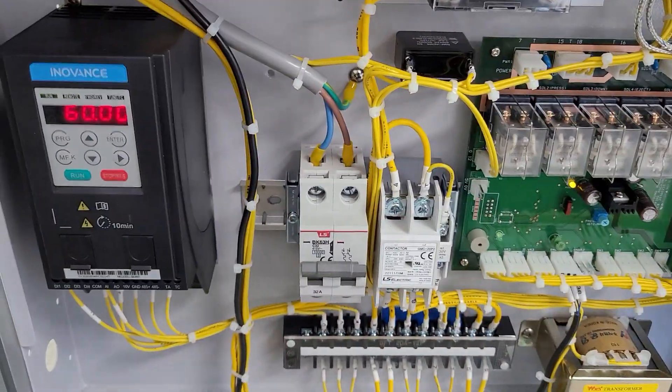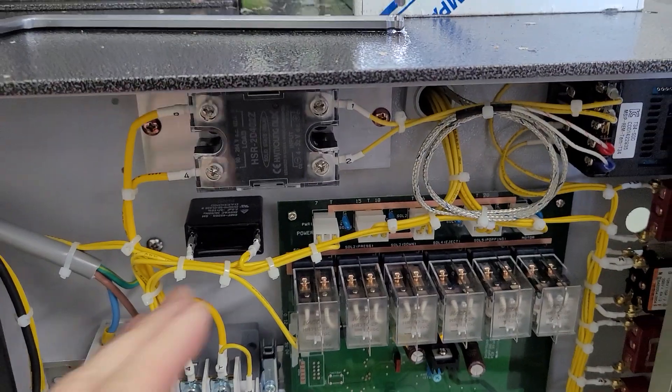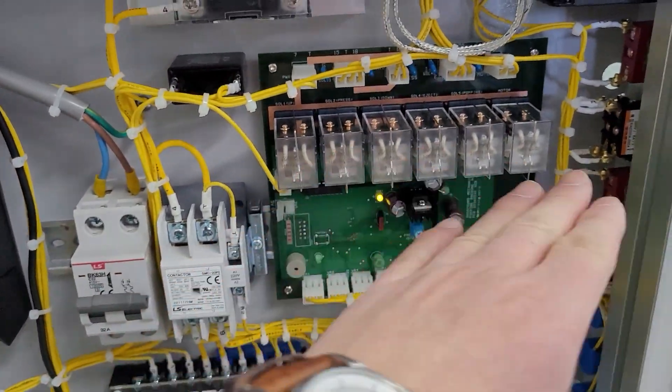Control box. Inverter 6000. SSL temperature controller. Breaker and contactor. Relays on PCB.